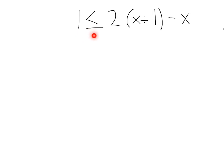Here we've got 1 is less than or equal to 2, parentheses, x plus 1, minus x. First, let's take care of our parentheses here by distributing. That's going to leave us with 1 is less than or equal to 2x plus 2. Then we've still got a minus x here. Next, I see we've got a 2x here and an x. So let's combine our like terms. That's going to leave us with 1 is less than or equal to 2x minus x is just x plus 2.